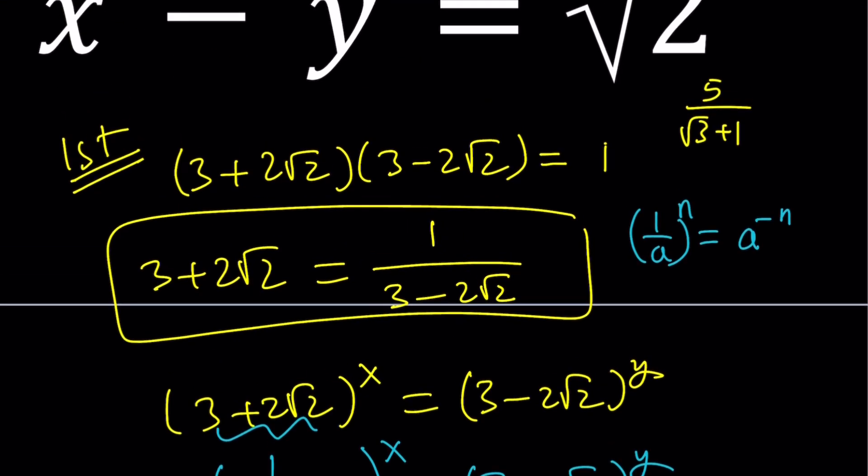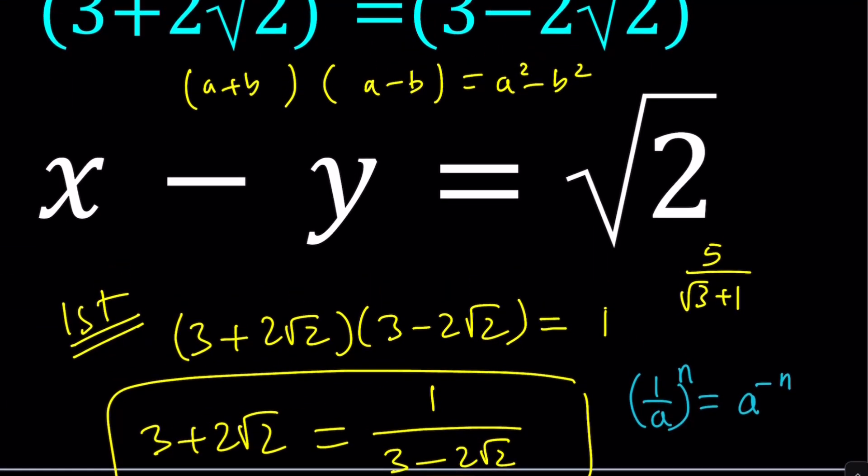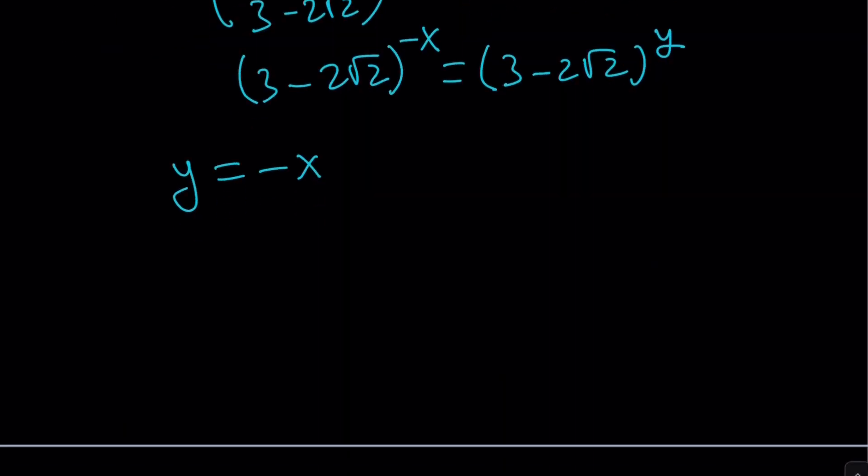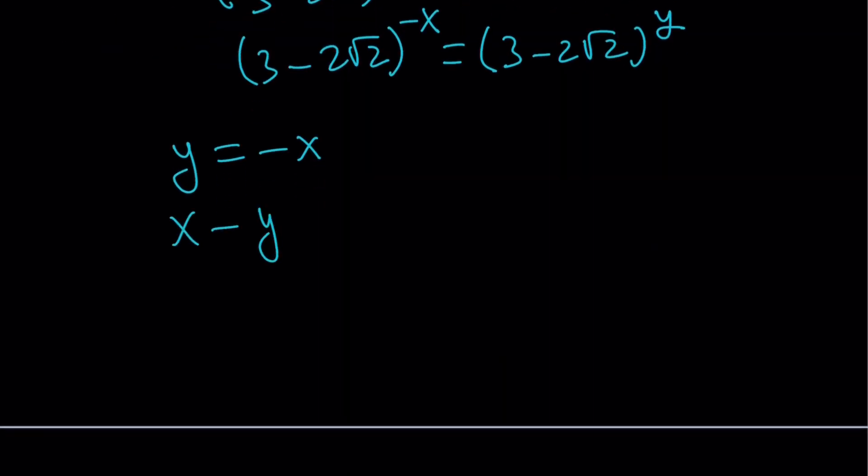So now y = -x, but we got another equation. Let's use it. x - y = √2. We can definitely use it. Since y can be replaced with -x, we get x - (-x) = √2. That means 2x = √2, and x = √2/2.